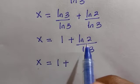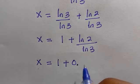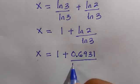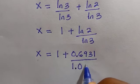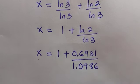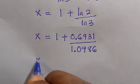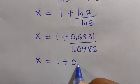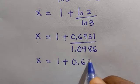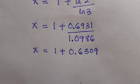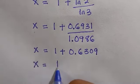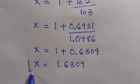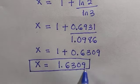We can leave the answer like this, or we can have the decimal solution. We have ln(2) as 0.6931, while ln(3) is 1.0986. By dividing these two numbers we have 1 plus 0.6309, and x equals 1.6309. This gives the value of x for this problem as the decimal solution.